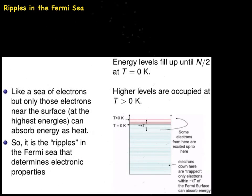One way of looking at this is, here is a sea of electrons and those at the surface are at the highest energy. These electrons at the surface can absorb energy as heat. Therefore, it is the ripples in the Fermi sea that determine the electronic properties. The higher the temperature, the more ripples, and the more electrons can be excited to higher levels.